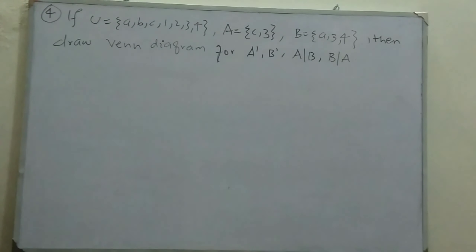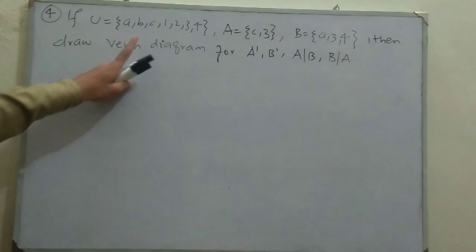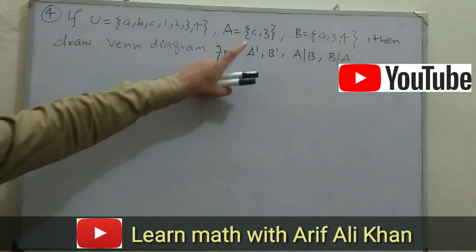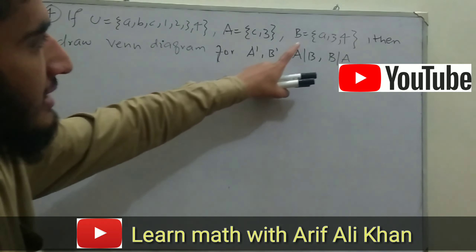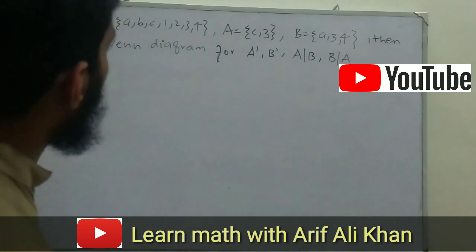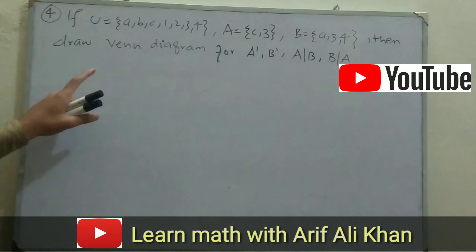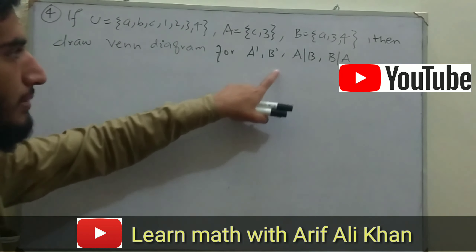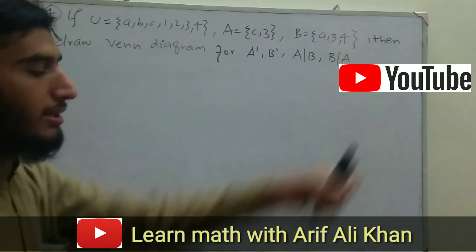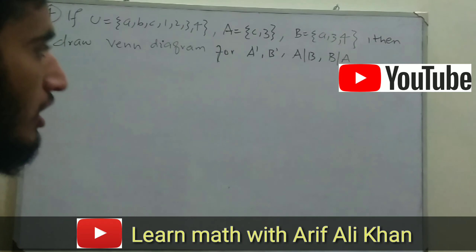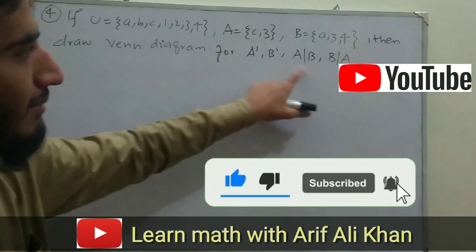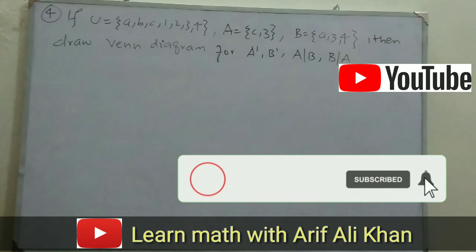Question number 4 states: If universal set U = {A,B,C,1,2,3,4}, set A = {C,3}, and set B = {A,3,4}, then draw a Venn diagram for A complement, B complement, A minus B, and B minus A. We are going to solve each step by step with the help of Venn diagrams.